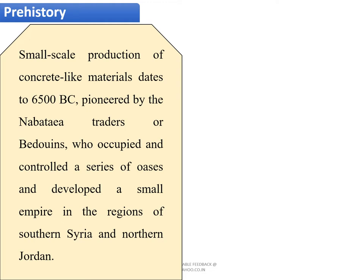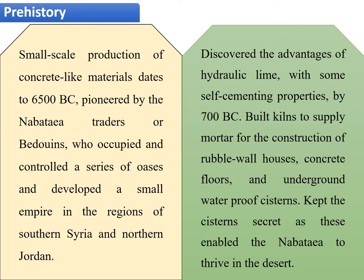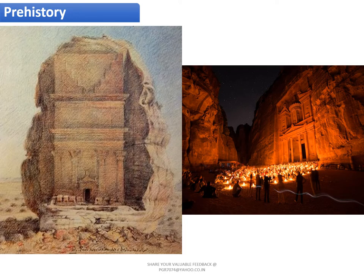Under prehistory, small-scale production of concrete-like materials starting from 6500 BC was pioneered by the Nabataean traders, or Nabataeans, who occupied and controlled a series of oases and developed a small empire in the region of southern Syria and northern Jordan. They discovered the advantages of hydraulic lime with self-cementing properties by 700 BC. They also built kilns to supply mortar for the construction of rubble wall houses, concrete floors, and underground waterproof systems, keeping these techniques secret as they enabled the Nabataeans to thrive in the desert.